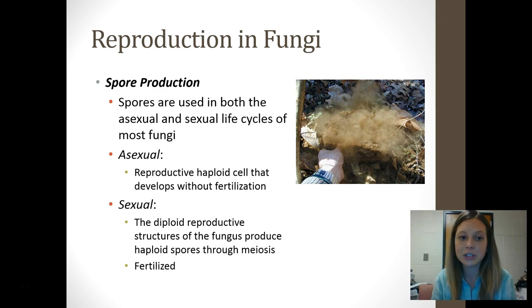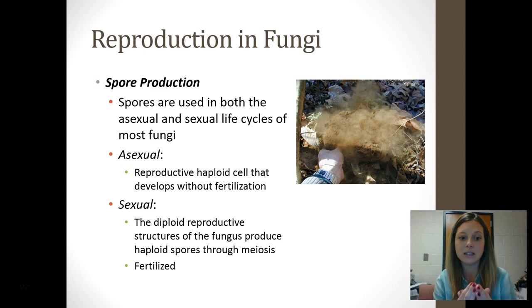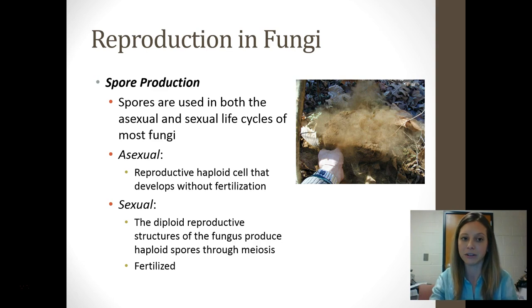Fungi have an interesting adaptation called spores, used in both the asexual and sexual life cycles of most fungi. In asexual reproduction, a spore is produced by one parent and can grow without fertilization. In sexual reproduction using spores, they are haploid — produced through meiosis — but must be fertilized in order for the new fungus to grow. With two parents involved, the new fungus is going to be genetically different from the original parent fungus.